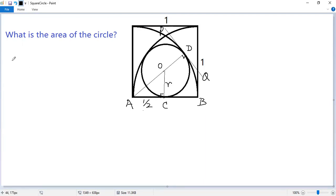How about ao? So ao equals ad minus od, right? We know ad is the radius of the unit circle. 1 minus od is r.